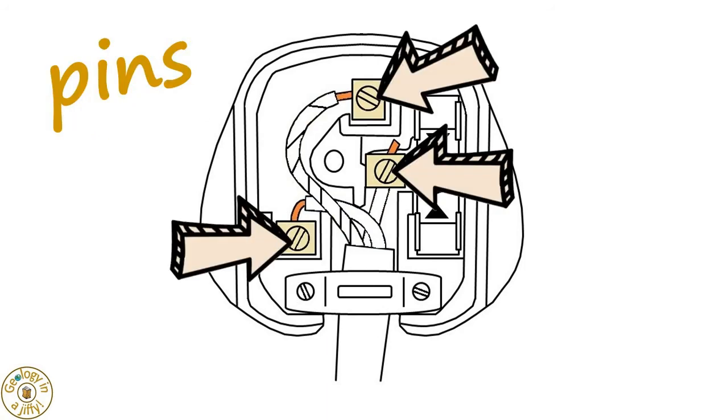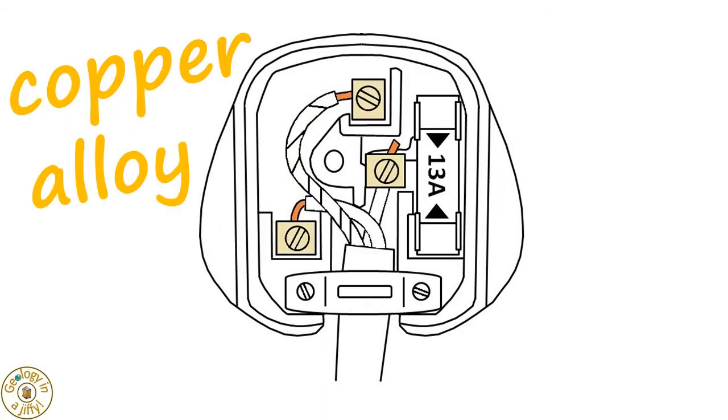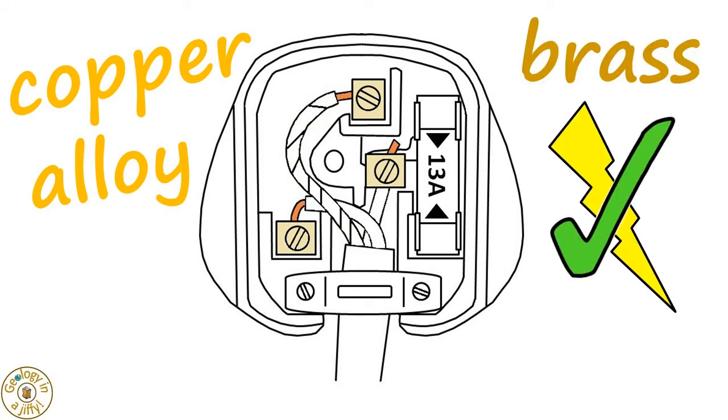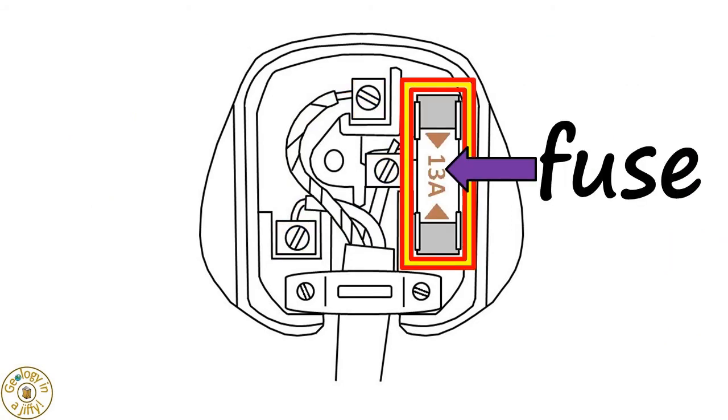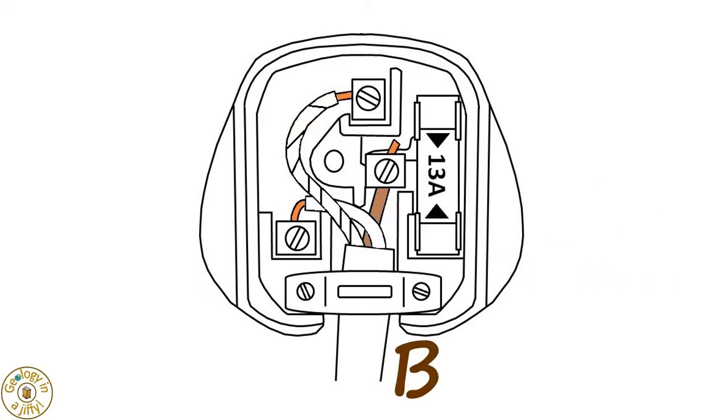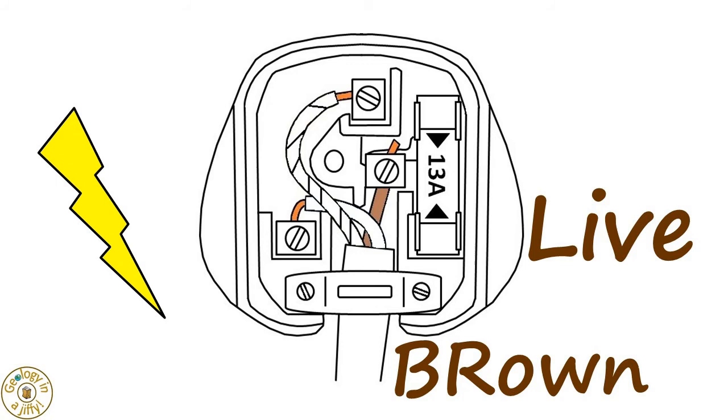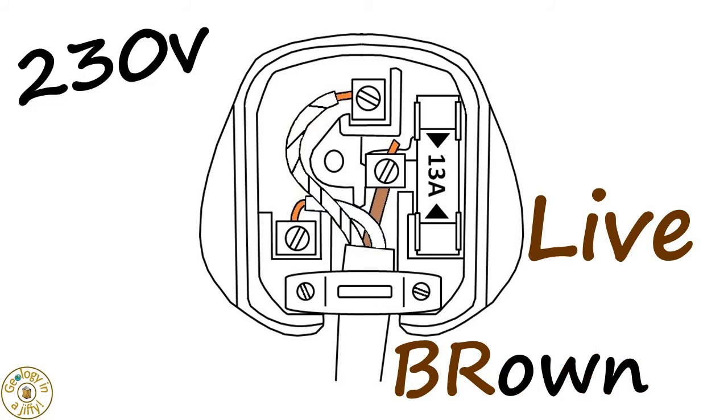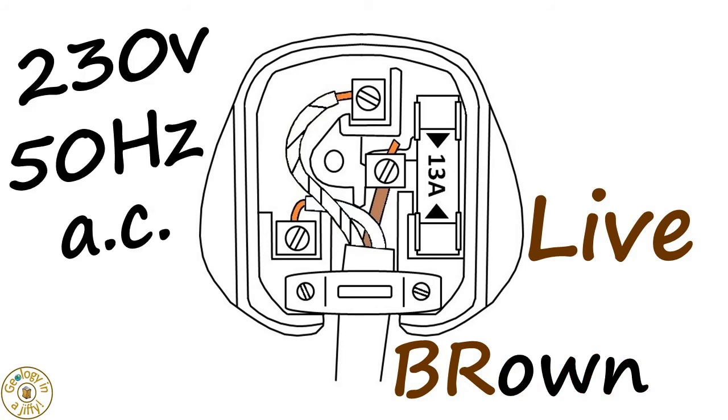The copper wires are attached to the pins, these made of a copper alloy called brass because brass is also a good electrical conductor but is also quite strong. Attached to the fuse is the live wire, which we can remember by knowing that B stands for bottom and R stands for right, and BR stands for brown, as the brown wire is the live wire that carries a current at 230 volts at a frequency of 50 hertz AC.